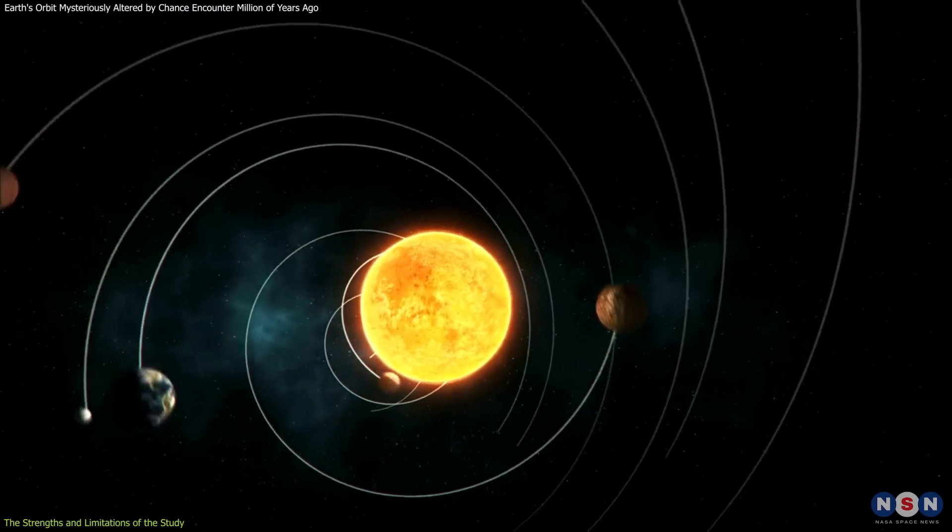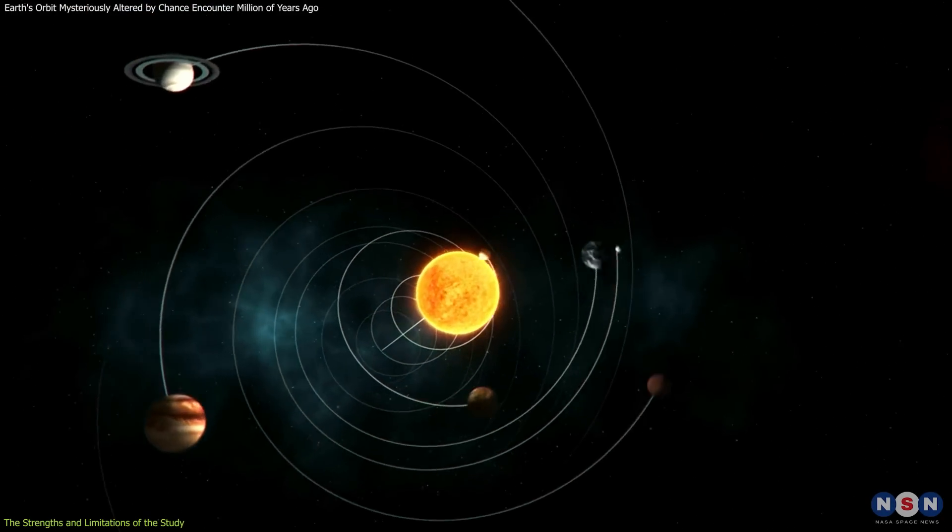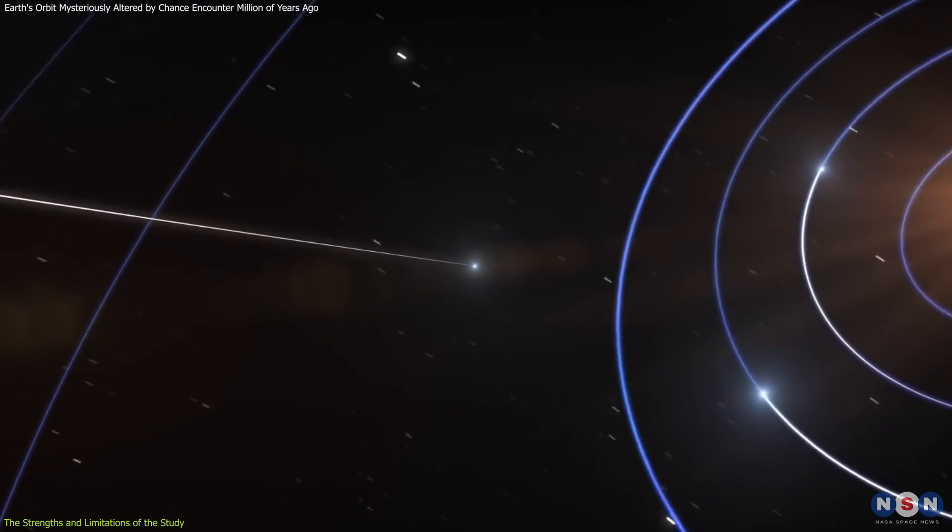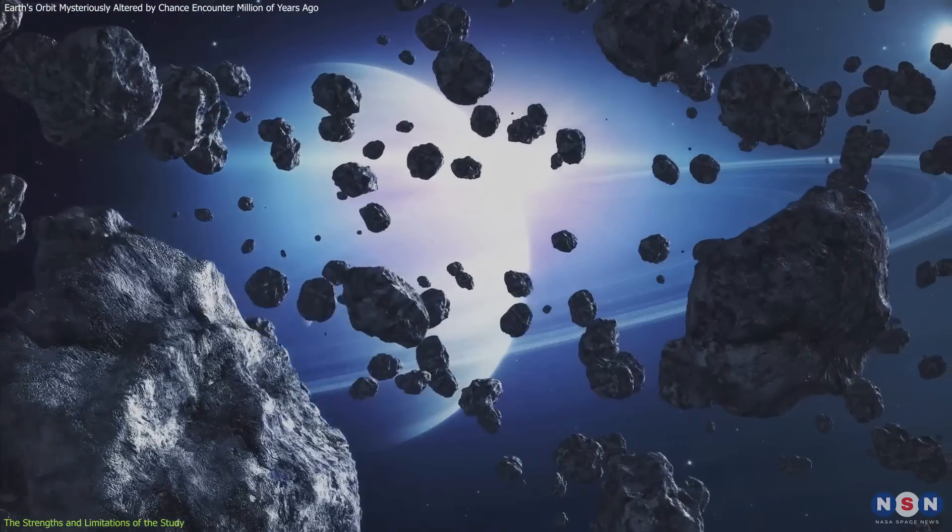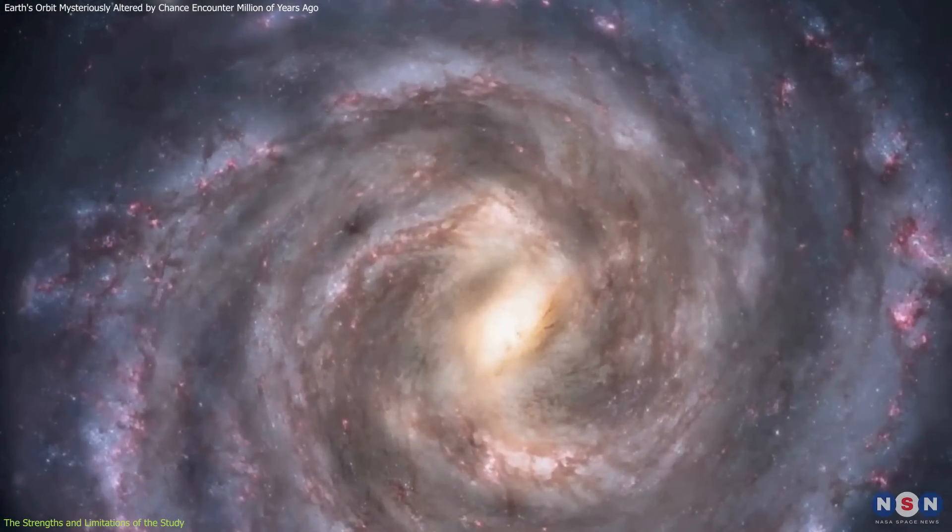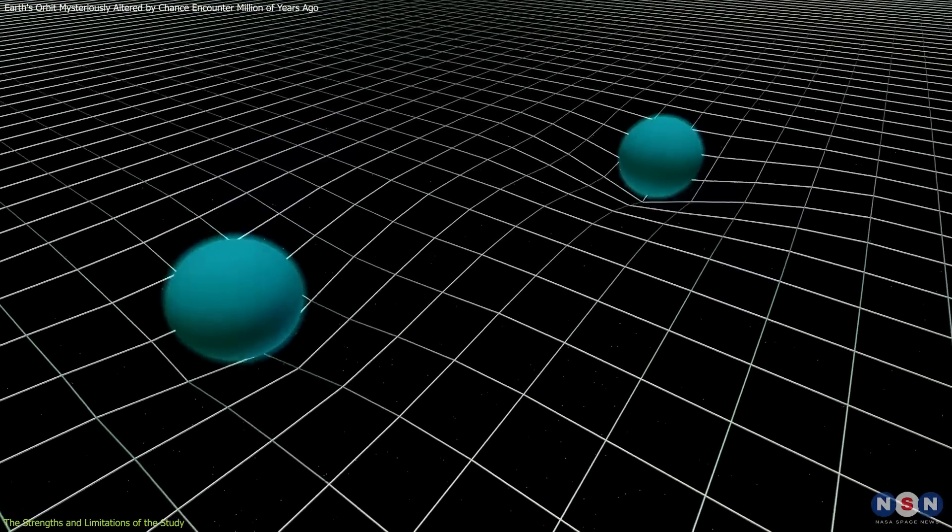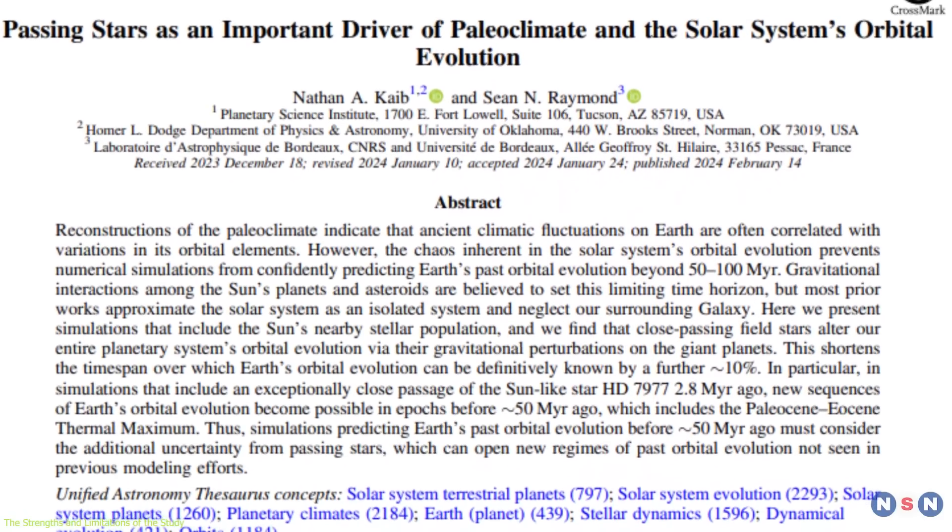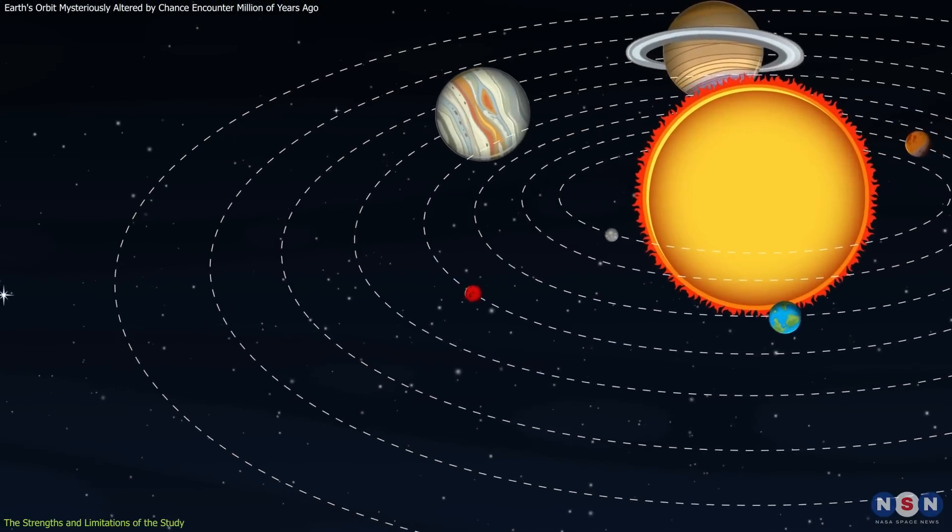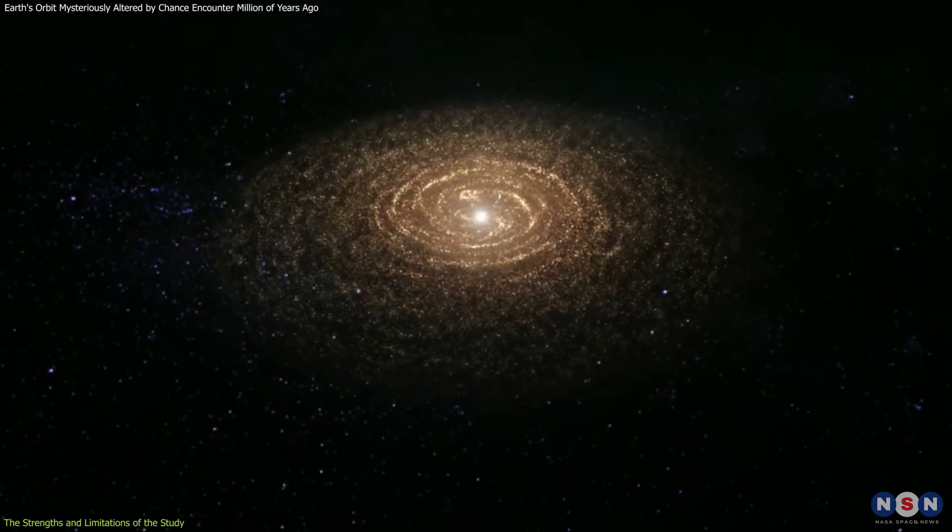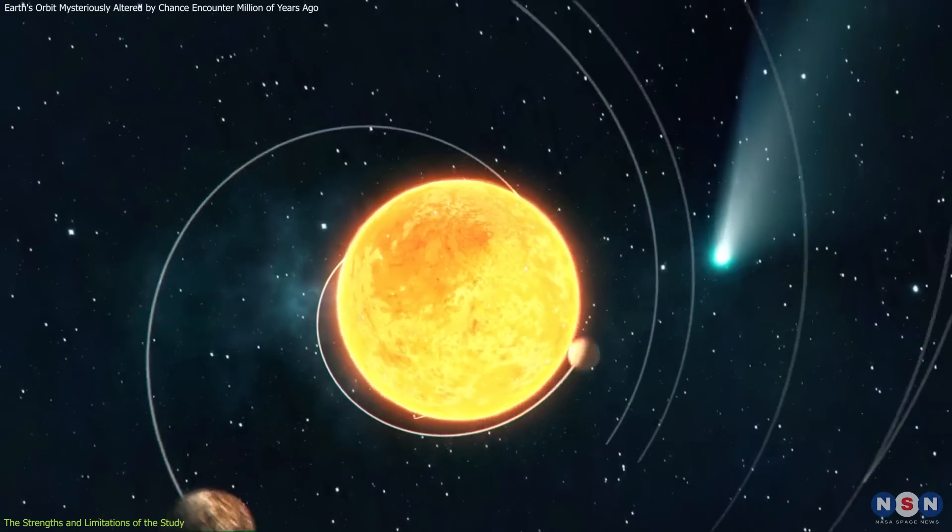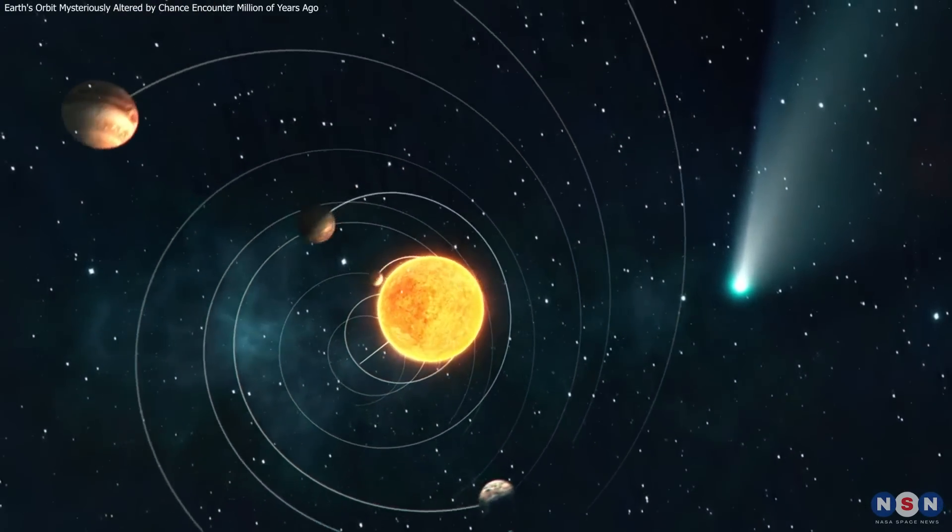Another limitation of this study is its difficulty of modeling the complex interactions of the solar system and the galaxy. It acknowledges that there are many factors that could affect the orbital evolution of the planets, such as the presence of other stars, planets, asteroids, comets, and dust in the galaxy, as well as the effects of general relativity and tidal forces. The study tries to account for some of these factors, but it admits that it cannot include all of them, and that some of them are poorly understood or unknown. Therefore, it cannot capture the full picture of the dynamics and chaos of the solar system and the galaxy, and it could miss some important details or mechanisms that could influence the outcome.